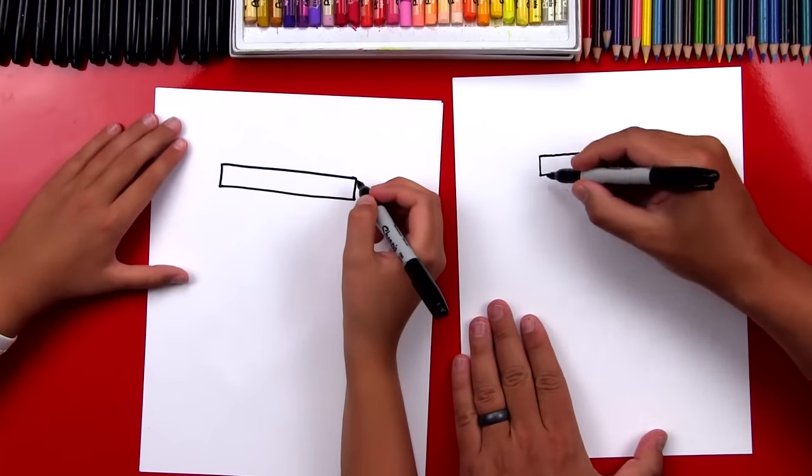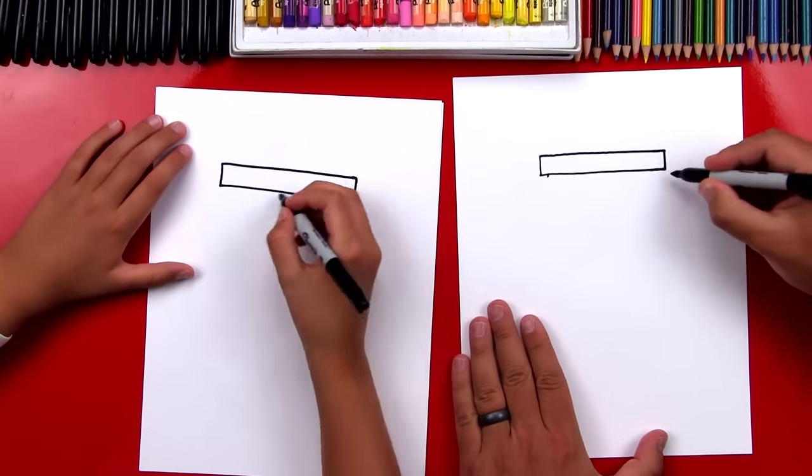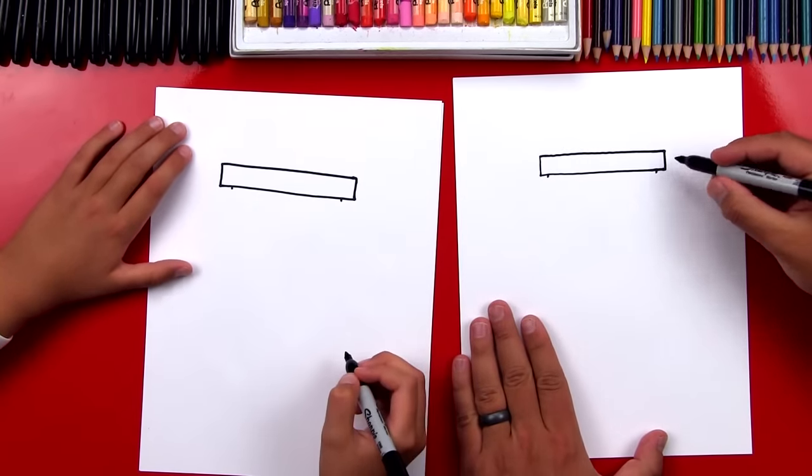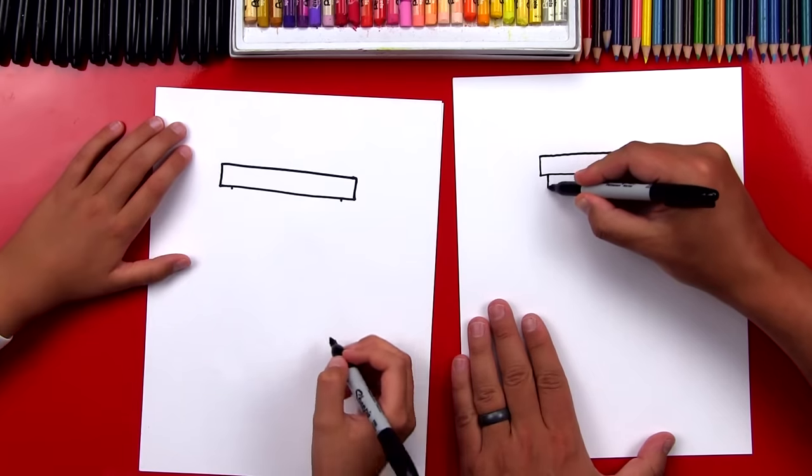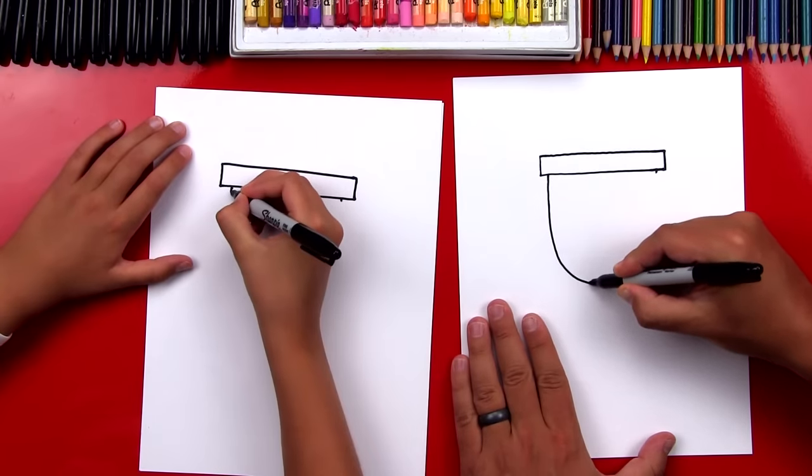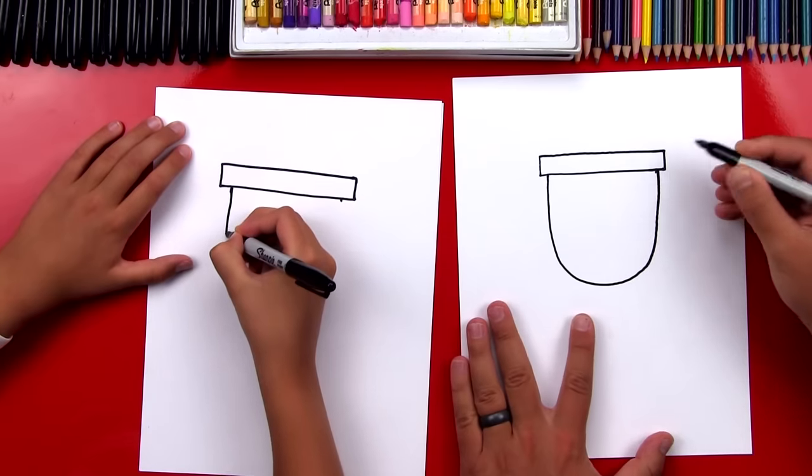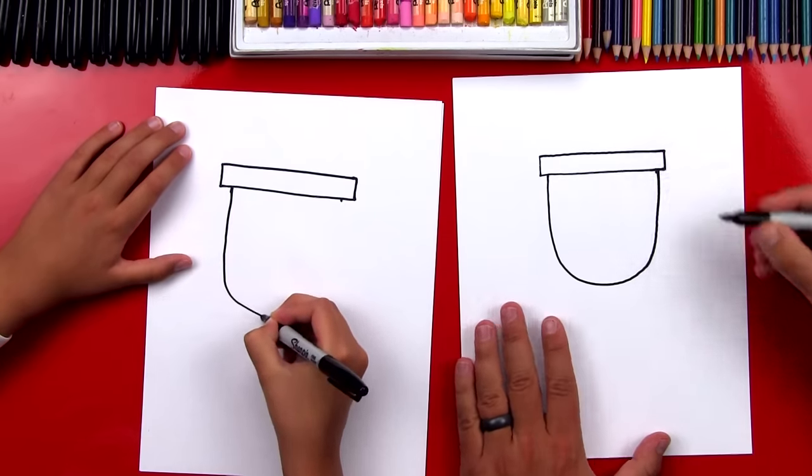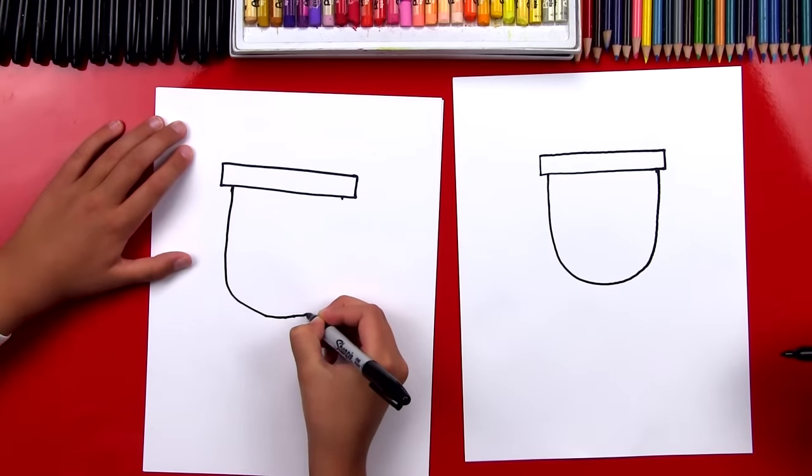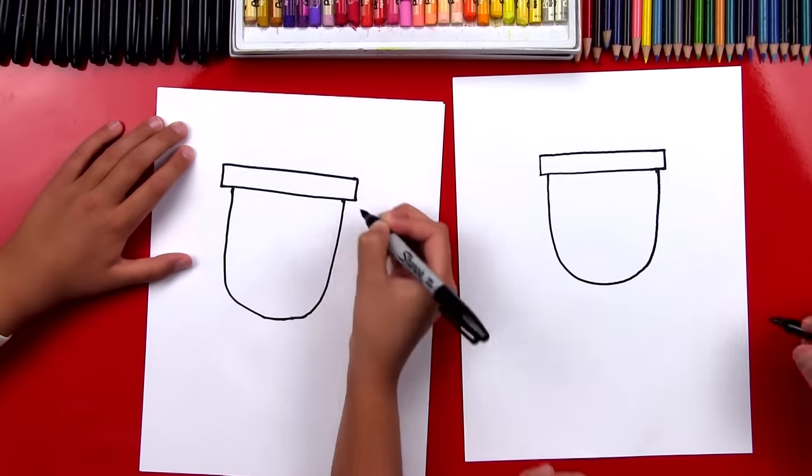Now we're gonna draw the letter U. Start inside of the rectangle and end on the same place on the right side. Draw a big U that comes down and then come back up so you have a little space on each side.